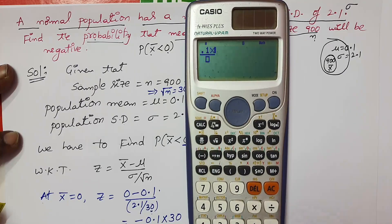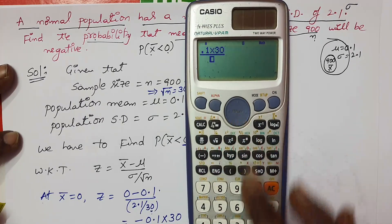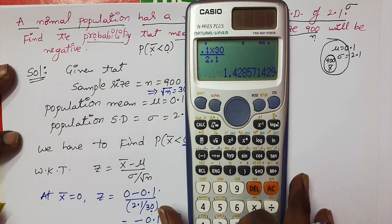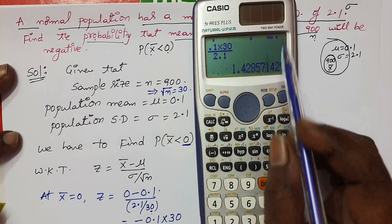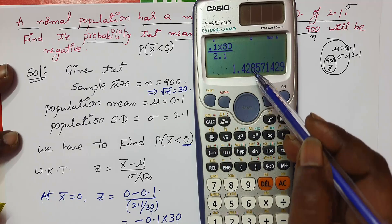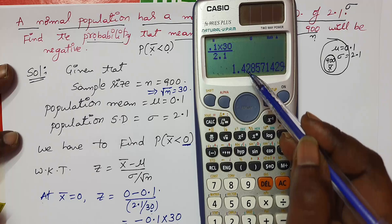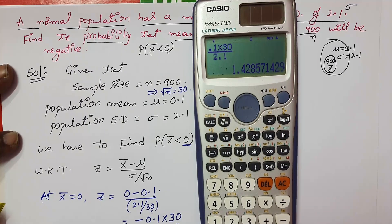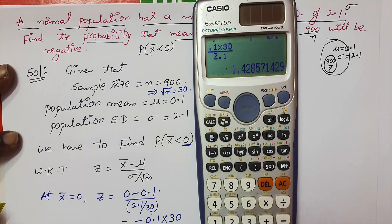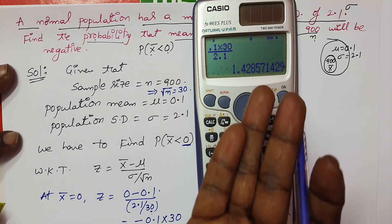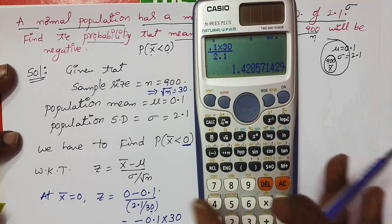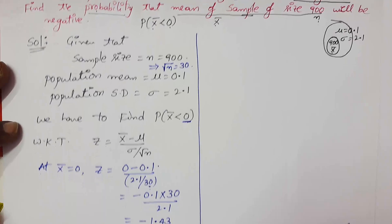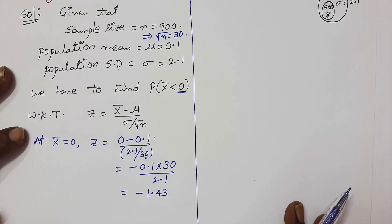So 0.1 into 30 division 2.1, I got 1.428. Since third decimal place is 8, it is more than 5, you can take 3 instead of 2 for the second decimal place, so minus 1.43. Otherwise, if you don't want to correct the second decimal place, you can take only 1.42, no problem.